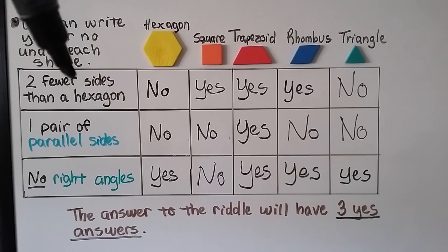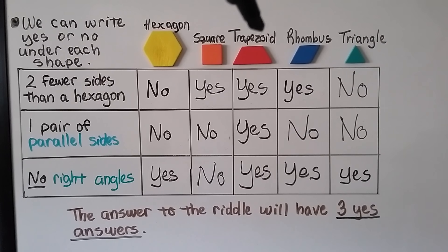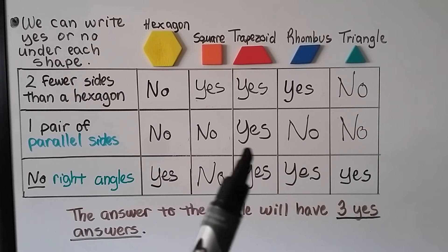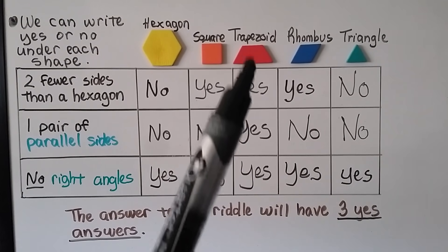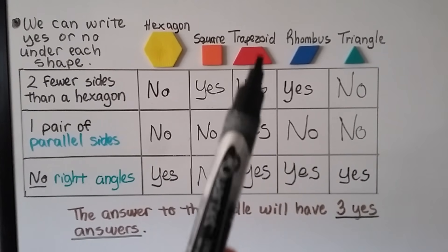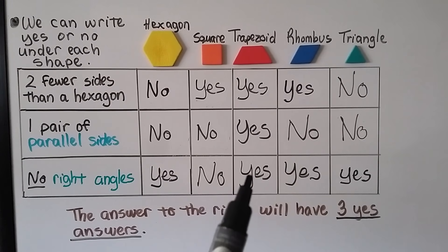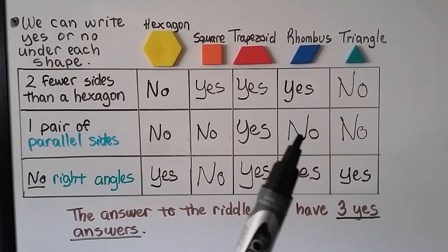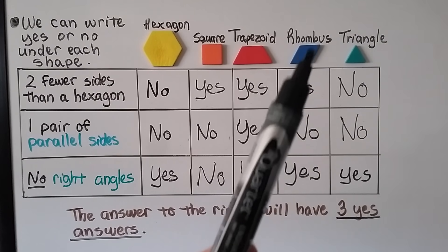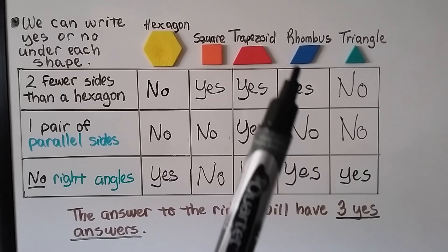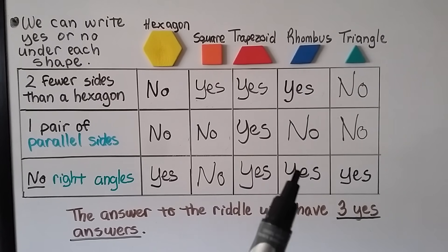What about a trapezoid? Does it have two fewer sides than a hexagon? A trapezoid has four sides, a hexagon has six, and four is two less — yes. One pair of parallel sides? Yes, the top and bottom are parallel — that's one pair. No right angles? That's true — yes, there are no right angles. What about a rhombus? It has four sides — two fewer than six — yes. One pair of parallel sides? The top and bottom are parallel and the two sides are parallel, so that's two pairs — no. No right angles? Yes, there are no right angles.